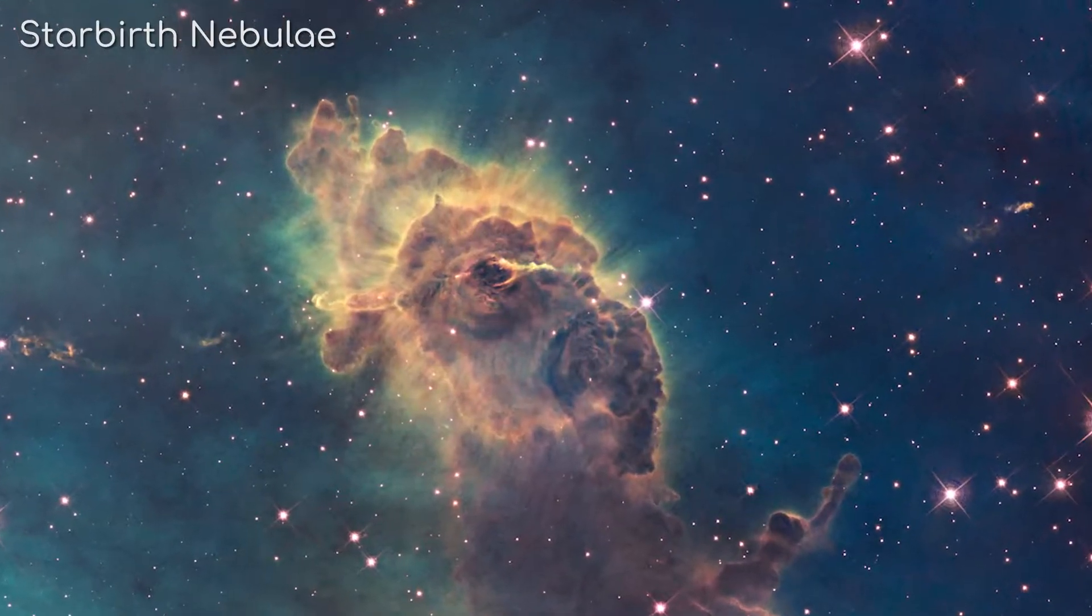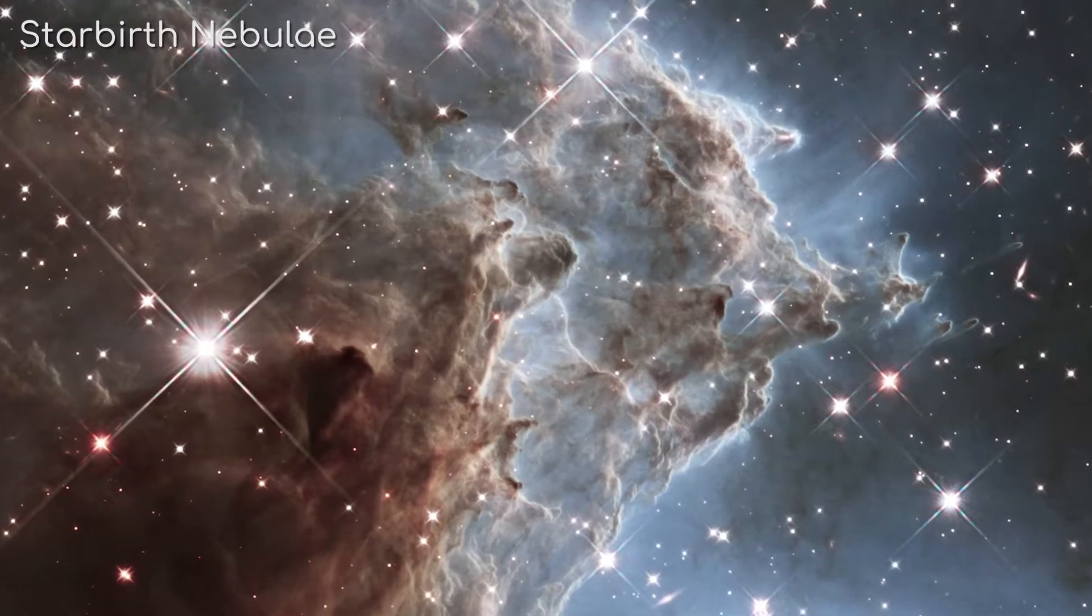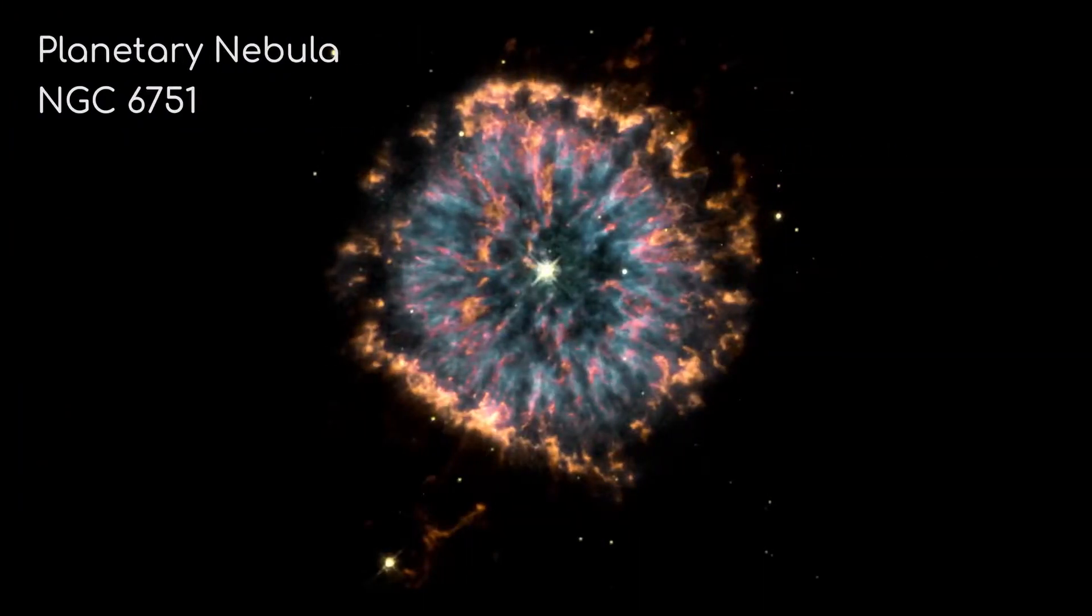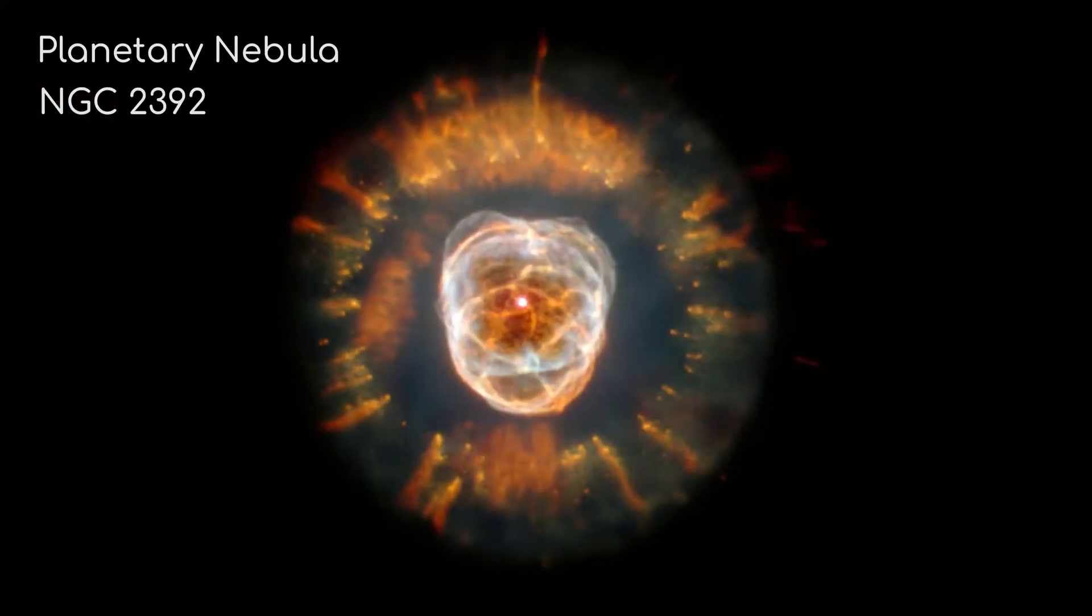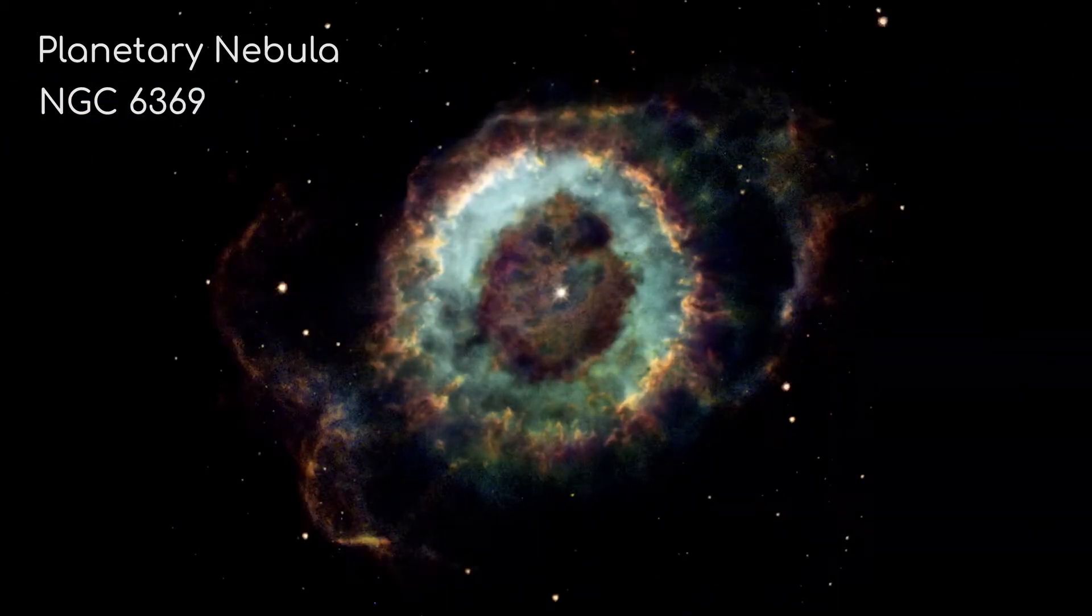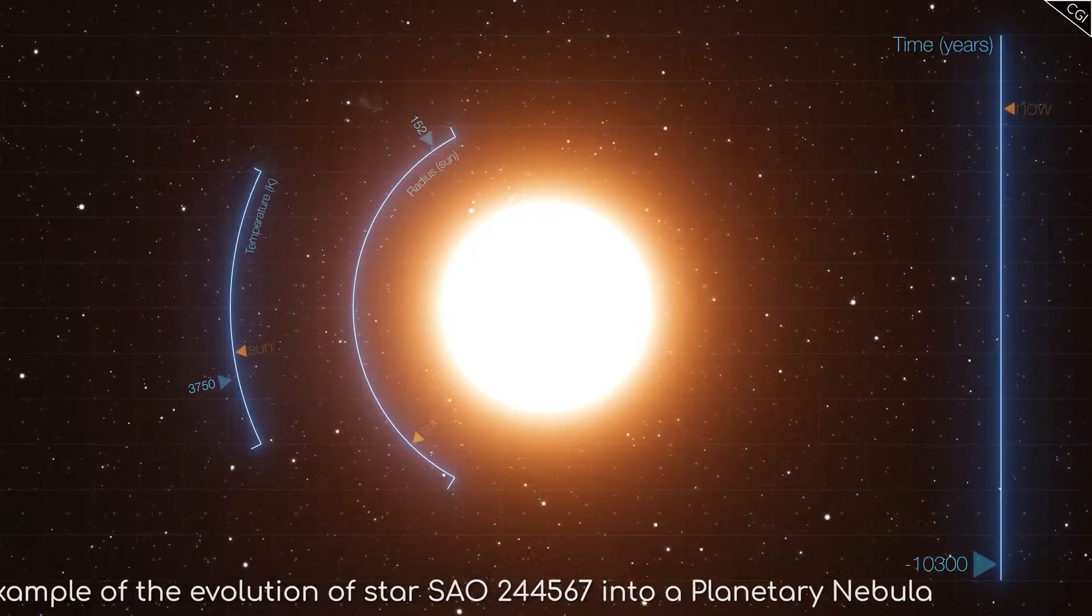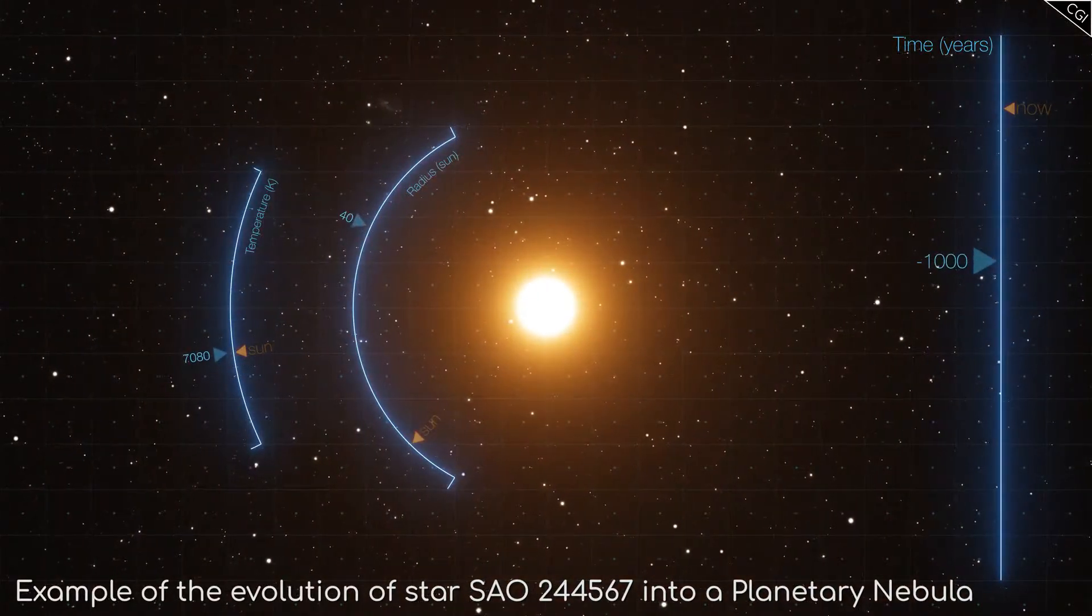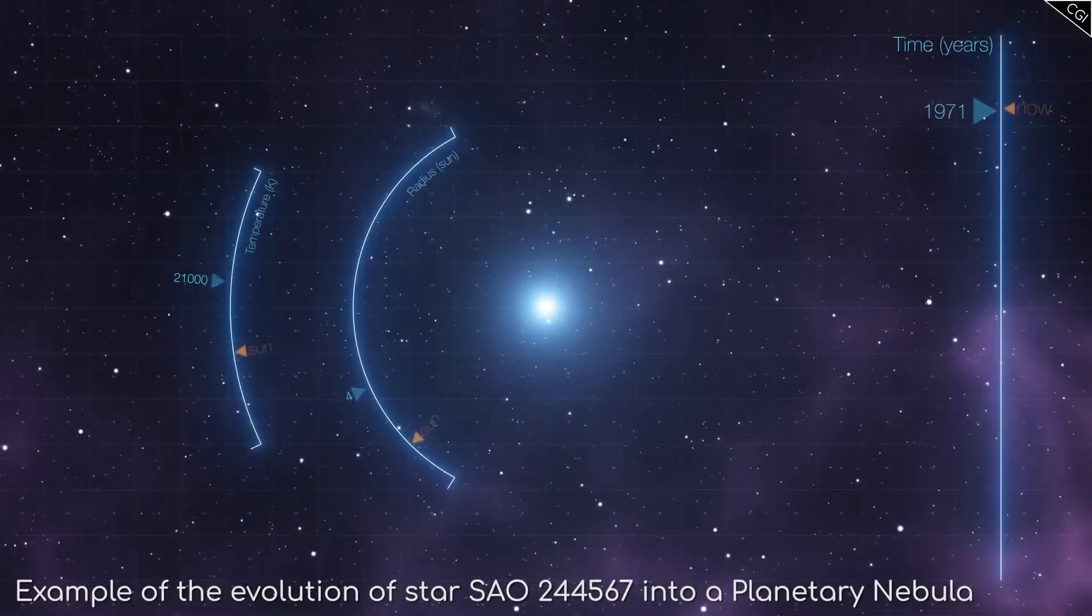While regular nebulas are the birthplace of stars, a planetary nebula is not a place planets form. Instead, it was just an unhelpful naming convention used by early astronomers who noted the round shapes of these nebulas, and they thought they looked a bit like planets. The name stuck, even though our interpretation of the name has moved on.